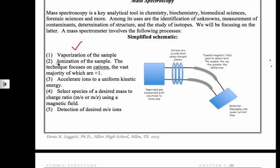So you vaporize the sample, and the next step is to ionize the sample. So once you have a vaporized gas, you're going to bombard it with electrons to form ions.